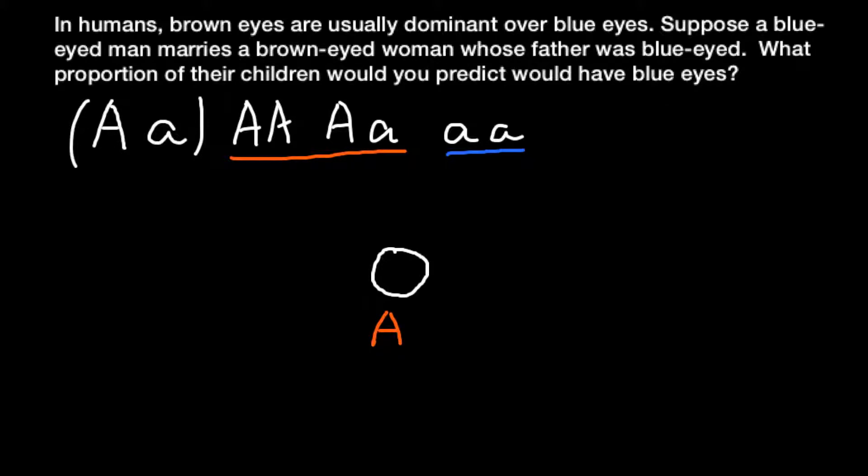So we can list her genotype as dominant A and blank space. What we know about her? We know that everyone would have a mother and a father. We don't know the genotype of her mother, but we know that the genotype of her father was small a, small a, because her father was blue-eyed. And now let's consider her phenotype.